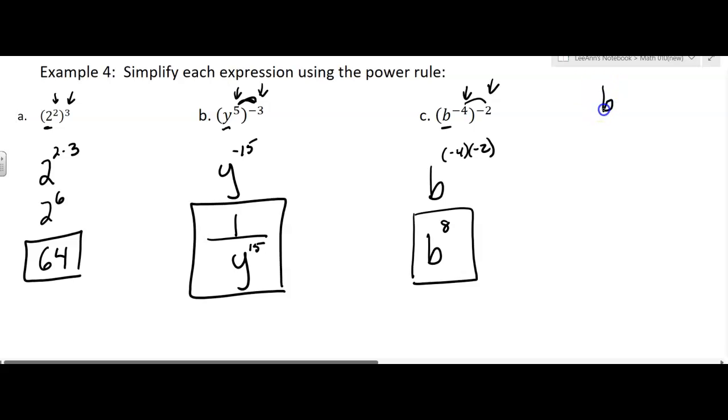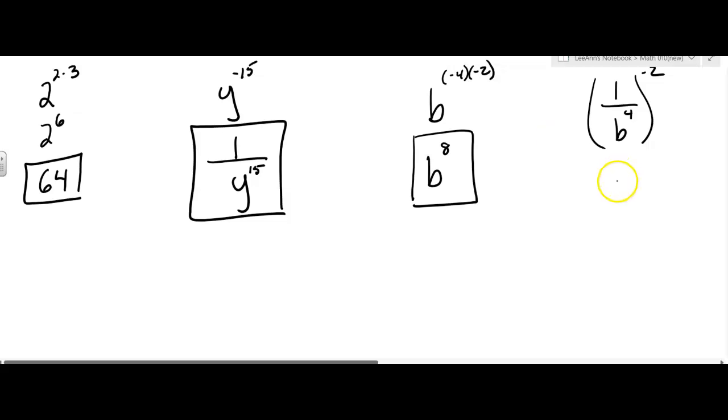Now if you're like, I want to do that a more complicated way. Then you could say b to the negative four, like look at the inside and say, oh, that's one over b to the fourth to the negative two. Well, then that's going to mean that I reciprocal the whole thing. There's another rule we haven't talked about yet. So I probably shouldn't have done it this way. One over one over b to the fourth squared, right? Then you'd have to do one over one over b to the fourth times one over b to the fourth.